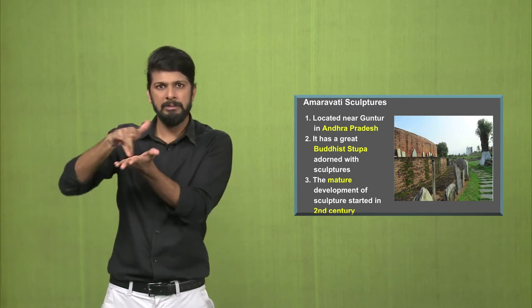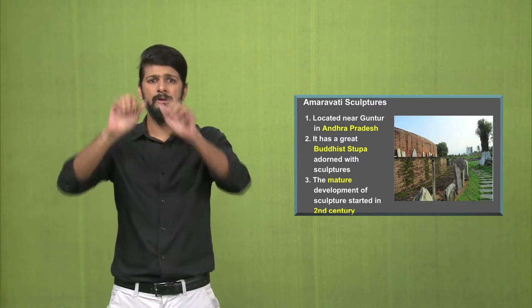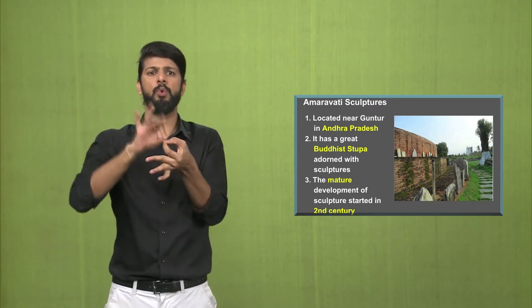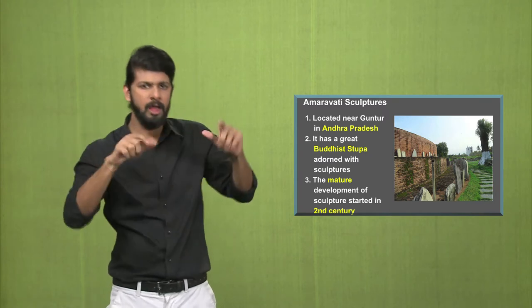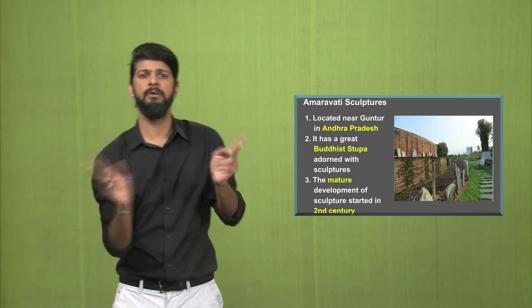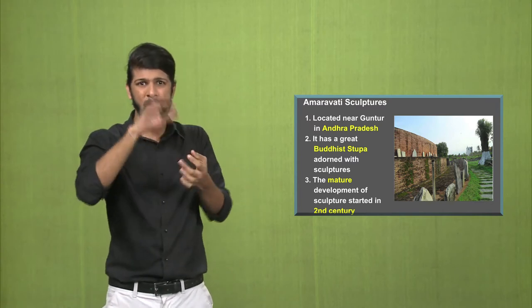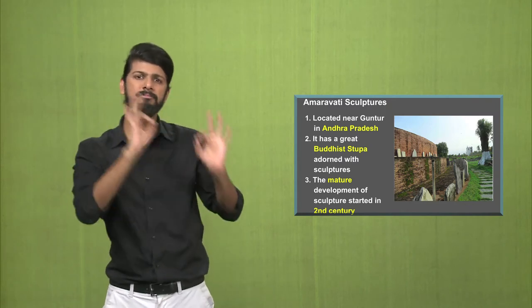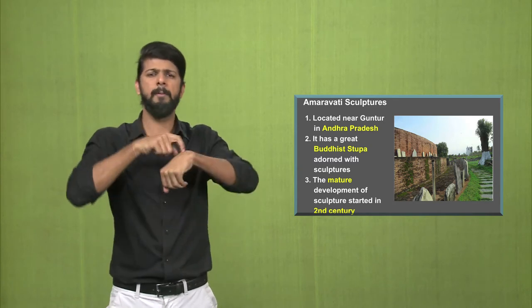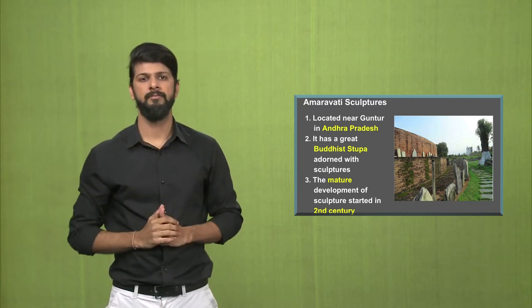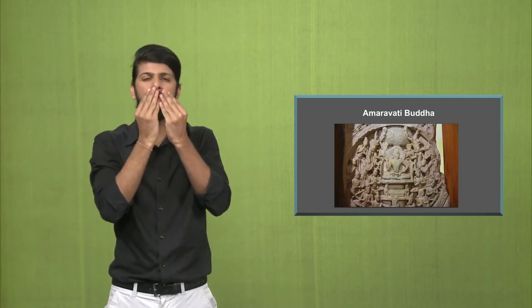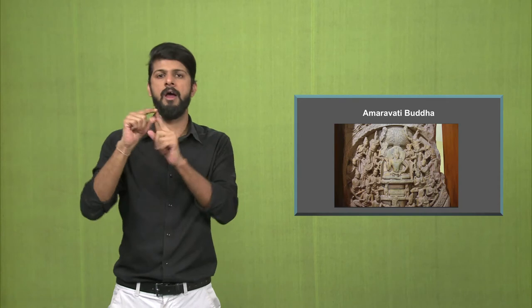Then we have the Amaravati sculptures, located near Guntur in Andhra Pradesh. This place has a huge Buddhist stupa and within the stupa there are many sculptures, mostly of Buddhist origin. The maturity of development of the sculptures technically started in the second century AD. This is one example of the Amaravati piece — you can see the decoration and various motifs, but the face is disfigured.